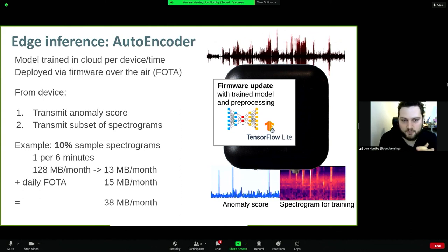This means that the model is being trained in the cloud, as I mentioned, per device and per time, and then we deploy it to our device over the air. Then we output the anomaly score directly from the device. What this enables us is we don't need to send all the spectrograms anymore. But it's important to realize that we still want to send some spectrograms because we need the training data in the cloud. So what we might do is go down to say 10 percent, which runs at one per six minutes. That's around 11 megabytes.